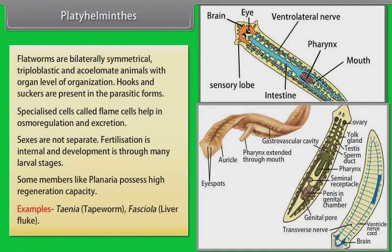Examples: Taenia, that is tapeworm; Fasciola, that is liver fluke.